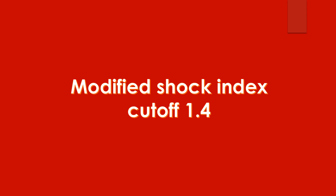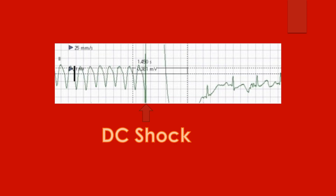In that study, a shock index cutoff of 0.7 and a modified shock index cutoff of 1.4 were used. They noted that the odds ratio of increased modified shock index for all-cause mortality, cardiogenic shock, life-threatening arrhythmias, and MACE were higher than those of increased shock index. The study used shock index at presentation to the emergency department and studied 7-day outcomes for STEMI in 160 patients.